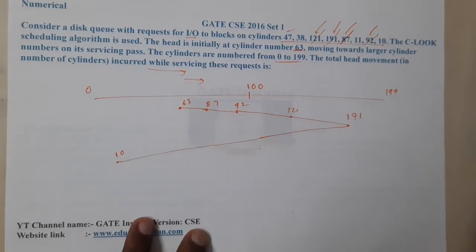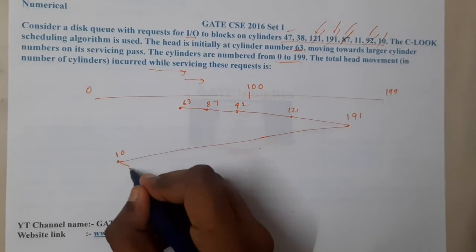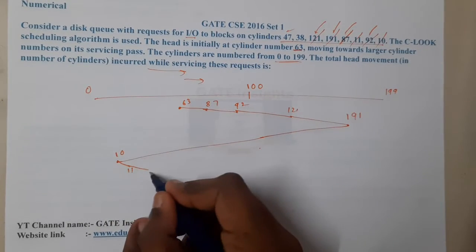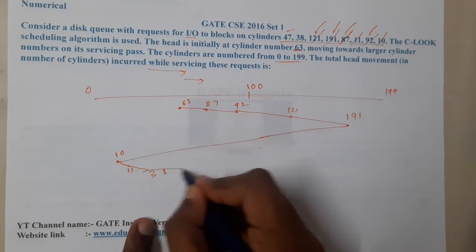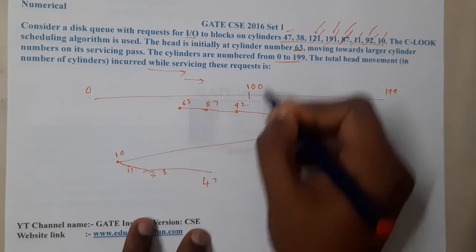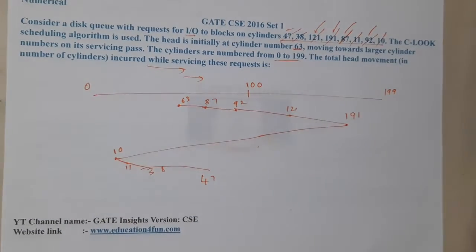From cylinder 10, we move in the increasing direction again. After 10, we complete 11, then 38, then 47. All requests are now served.